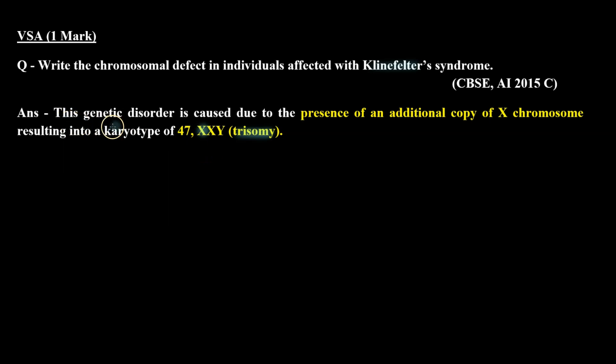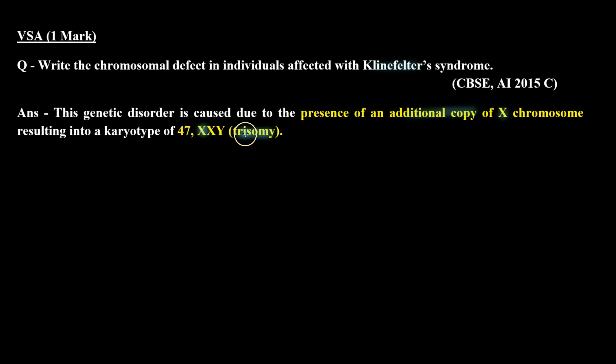This genetic disorder is caused due to the presence of an additional copy of the X chromosome, resulting in a karyotype of 47 with XXY — that is, trisomy. I hope this question is clear to you. Thank you.